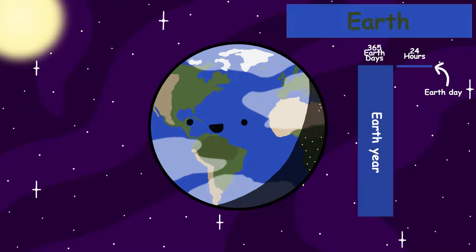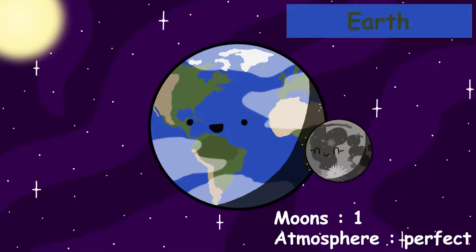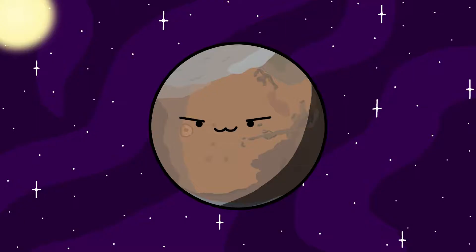Earth takes 23 hours and 56 minutes to rotate once on its axis, and completes one orbit around the sun every 365 Earth days. Earth has a breathable atmosphere and one moon. After Earth, we have Mars.